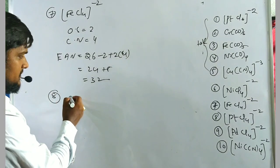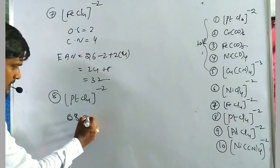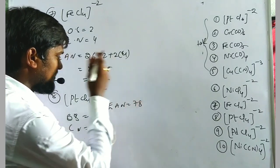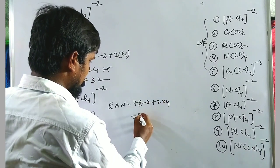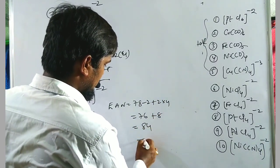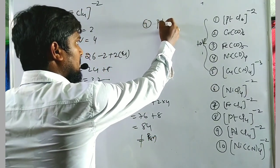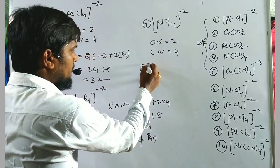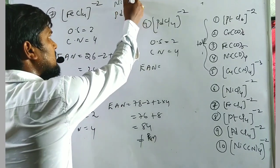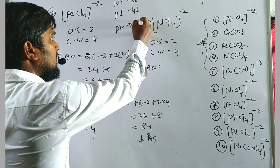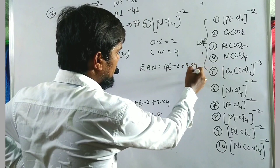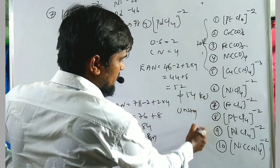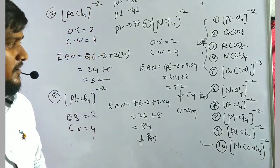Exercise example 8: [PtCl4]²⁻. Oxidation state = +2, coordination number = 4. EAN = 78 − 2 + (2 × 4) = 76 + 8 = 84, which does not equal radon (86). Unstable. Exercise example 9: [PdCl4]²⁻. Palladium atomic number = 46. EAN = 46 − 2 + (2 × 4) = 44 + 8 = 52, which does not equal xenon (54). Unstable. Examples 6 and 10 are the same, so the tenth calculation is omitted.